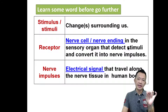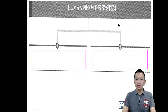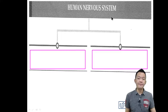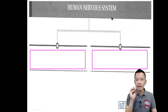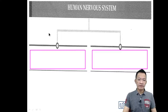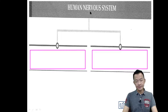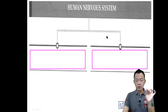Now we can start our main title. Turn to your notes page number one: Human Nervous System — 神经系统. When we talk about the human nervous system, we can separate it into two types.